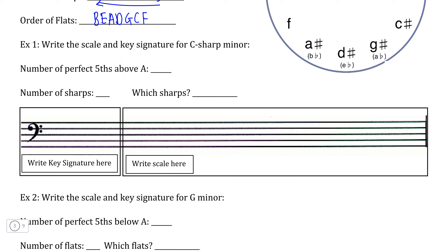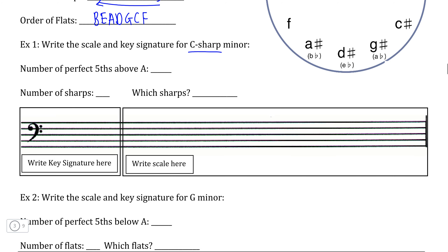For example, we are going to start with a sharp key — C sharp minor in this case. So if we want to use the circle of fifths method, we know that C sharp minor is a sharp key, and therefore we would be counting perfect fifths above A minor. So if we count: A — E is one perfect fifth, so E minor is going to have one sharp. E — B is two perfect fifths above A minor, so B minor is going to have two sharps.